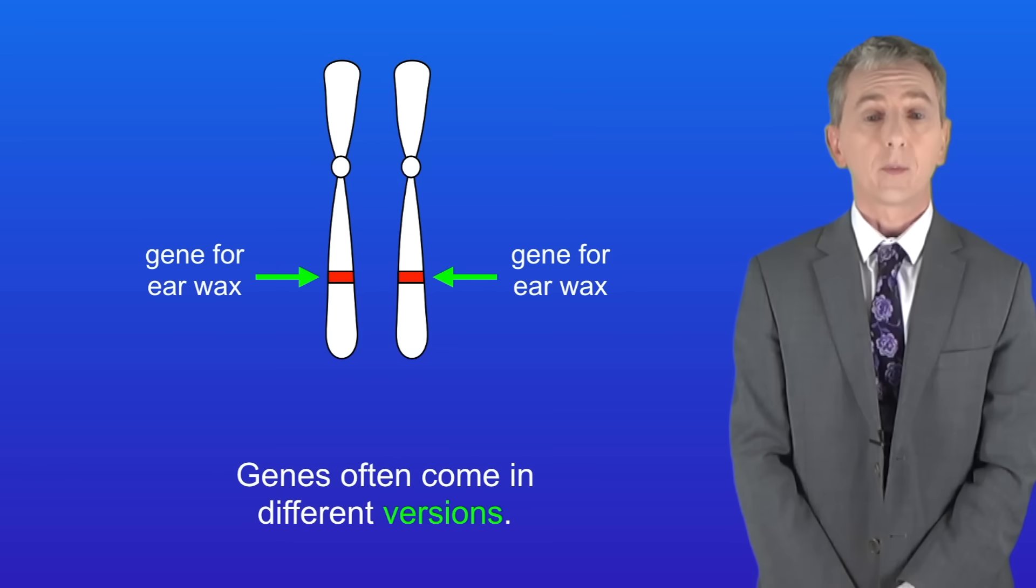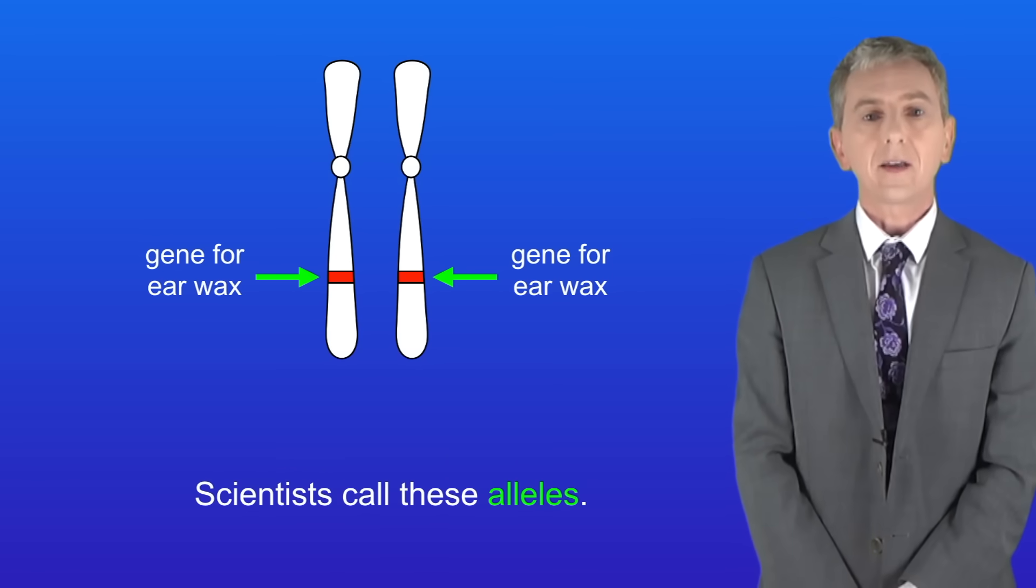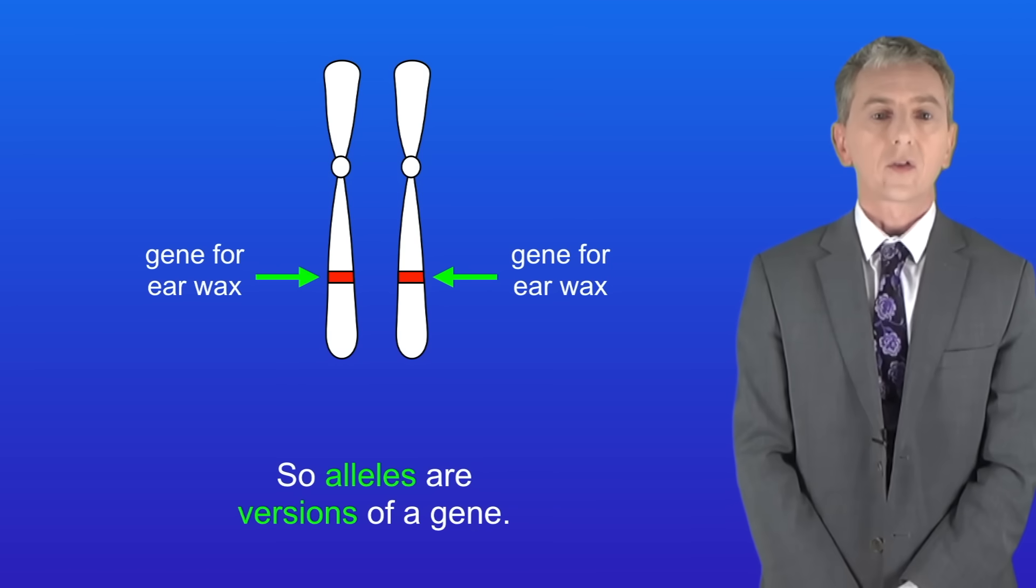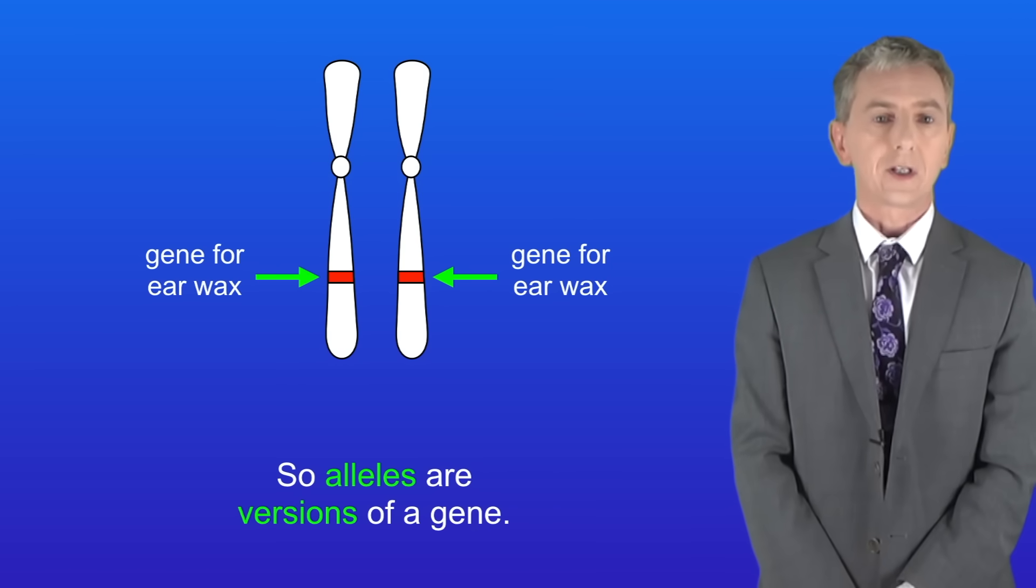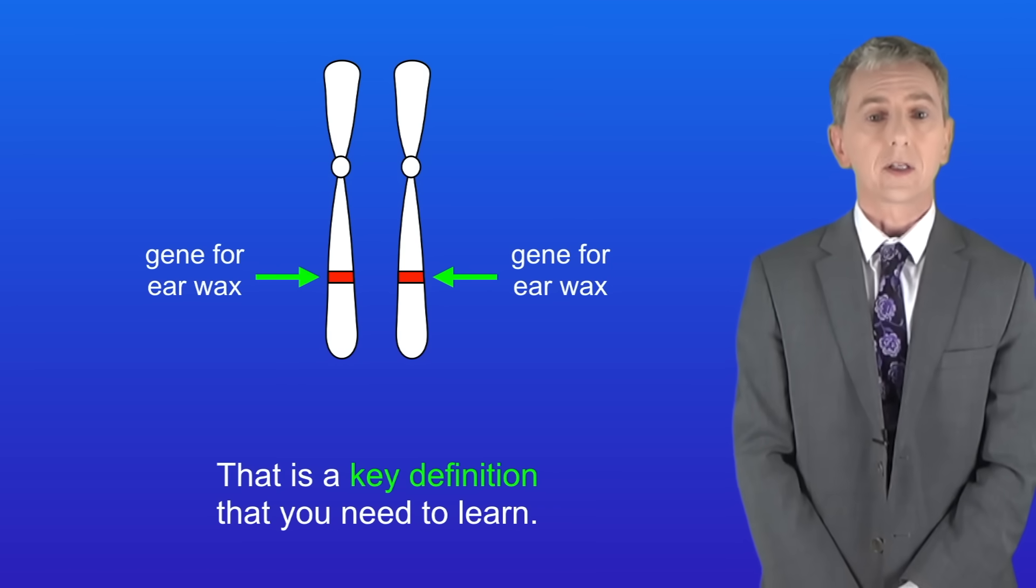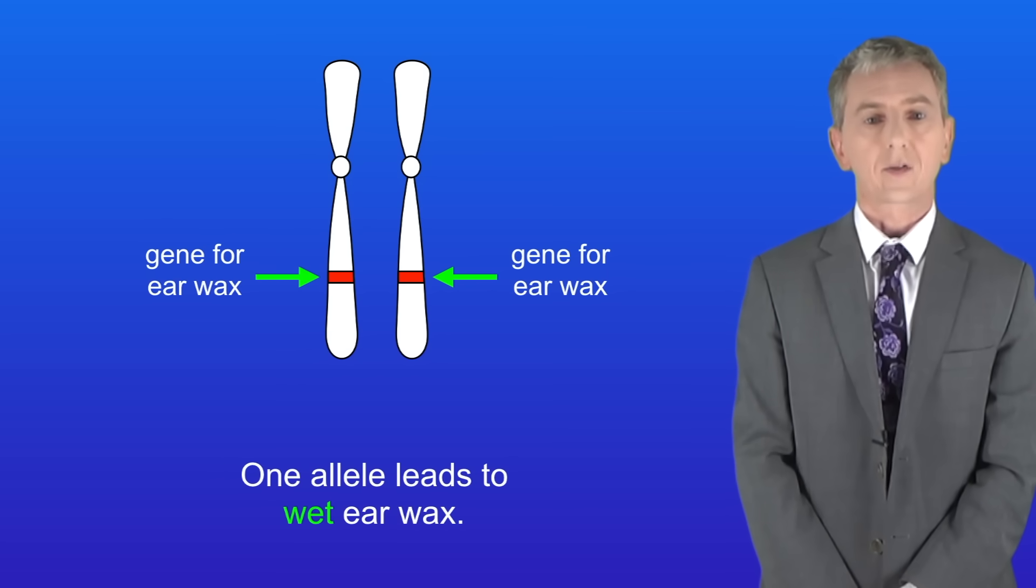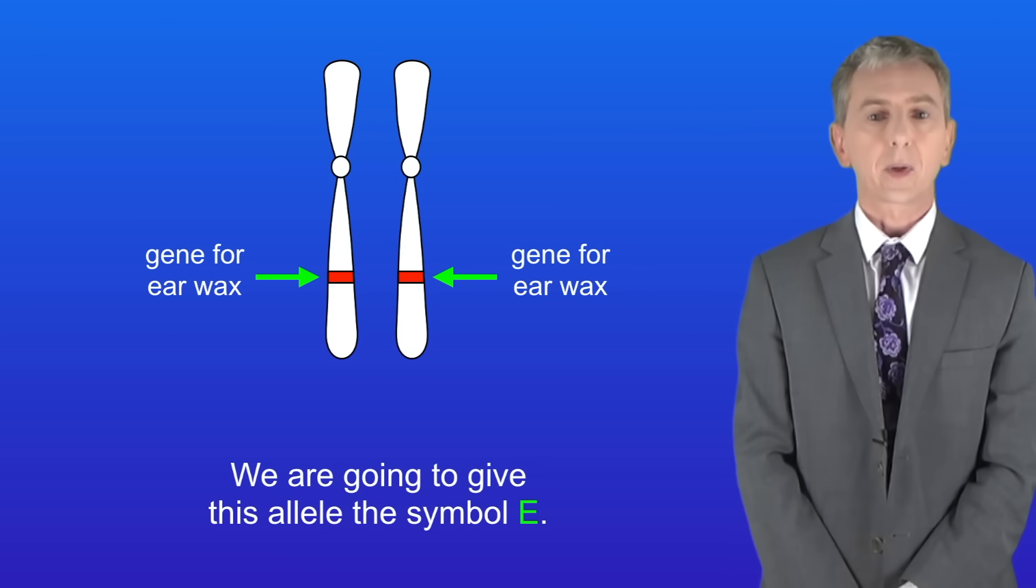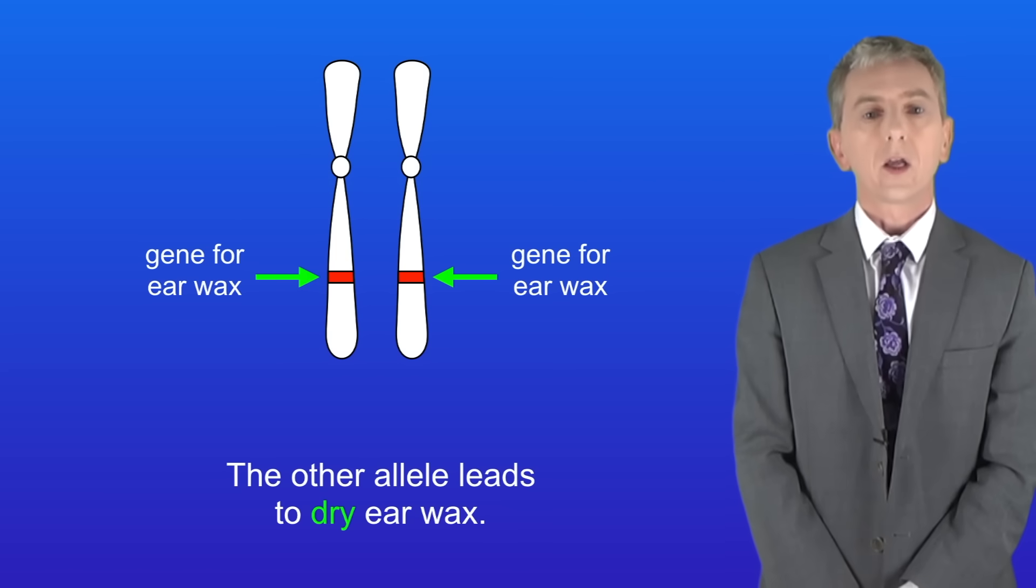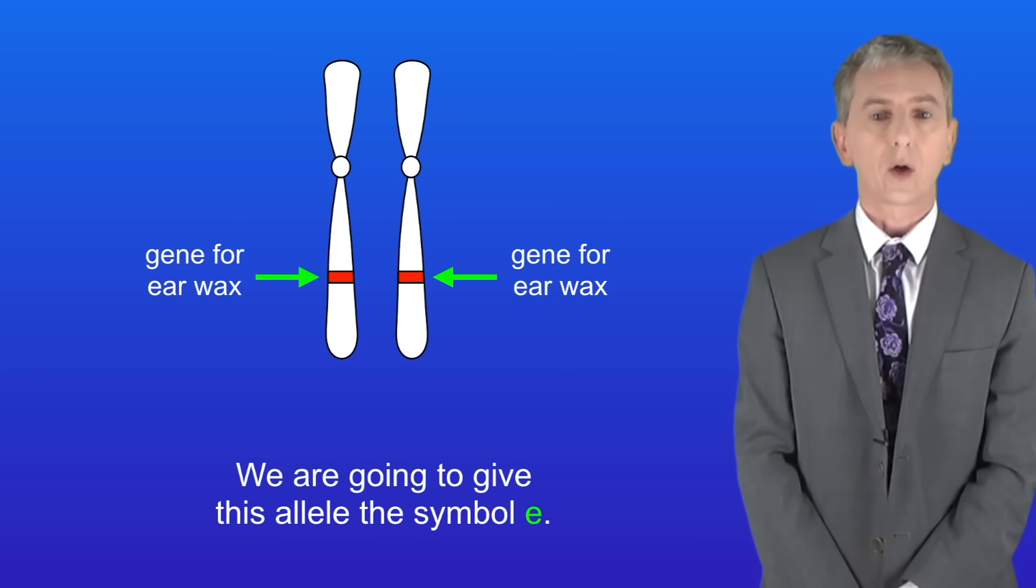Now genes often come in different versions and scientists call these alleles. So alleles are versions of a gene and that's a key definition that you need to learn. The gene for earwax has two alleles. One allele leads to wet earwax and we're going to give this allele the symbol capital E. The other allele leads to dry earwax and we're going to give this allele the symbol lowercase e.